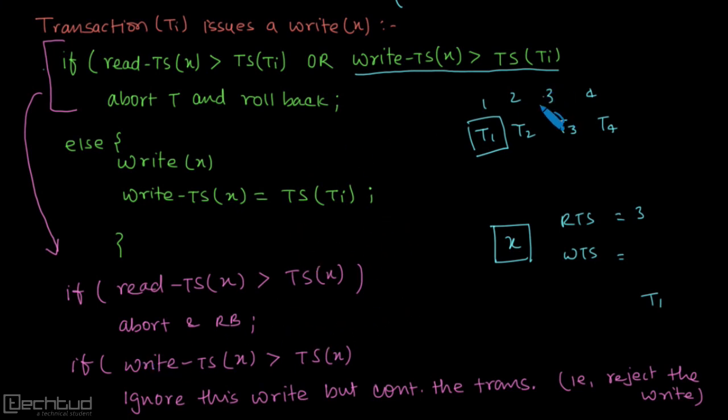Because a later transaction has read, so we need to abort and roll back. But in case of write, we change the rule here. If some later transaction has performed write, let's say this is 3, some later transaction has performed this write, then what do we do? We ignore the write operation by this transaction, but we don't abort and roll back. We continue the transaction.